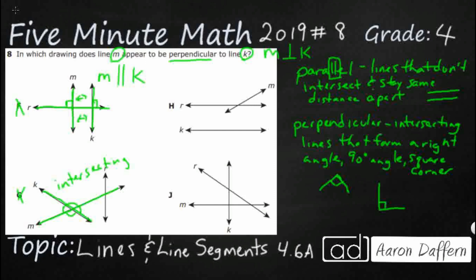In option H, M and K don't appear to actually cross, but since we've got arrows right here, we can actually extend this line down. The arrow means it goes on forever. So it actually does, but once again, it just looks like it intersects - just intersecting lines.